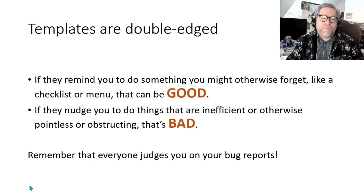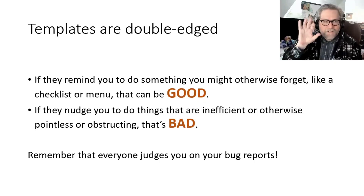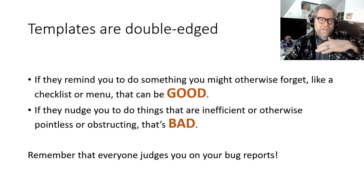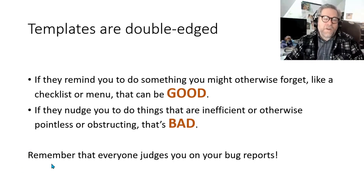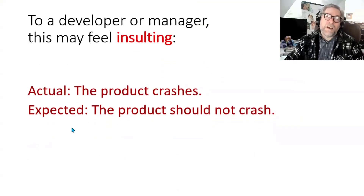The particular pedantic ritual I'm talking about is when you use a template for a bug report — specifically a bug description — and a common template is the one where people say 'expected versus actual.' That can be an okay thing, but it can also come off as insulting, like you think the developer is stupid. You have to watch out for that — for example, 'the product crashes' versus 'the product should not crash.'